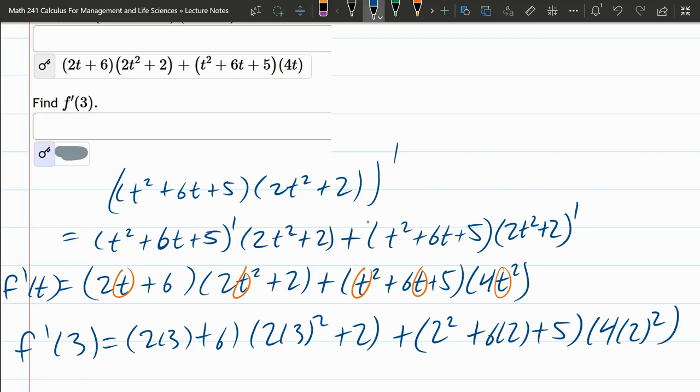Okay, after this, you just compute this out. That's just numbers. Just be careful with your order of operations. And the number you should get is 624.